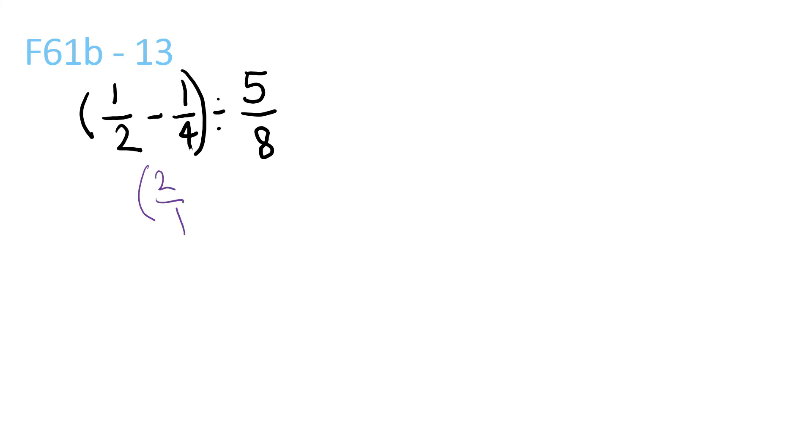Brackets 2 over 4 minus 1 over 4, brackets divided by 5 over 8. 1 over 4 times 8 over 5, because if you want to change it to multiplication, you just switch that and that.